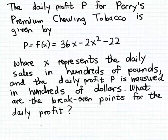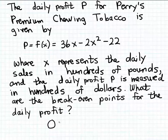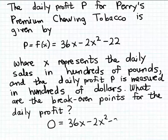We can find the break-even points for this profit function simply by taking the profit function formula — which in this case is a quadratic function — and setting the profit to zero. Notice this is the same as finding the x-intercepts of the function, because you find x-intercepts by setting the output to zero. So we set that formula to zero, resulting in an equation we need to solve.